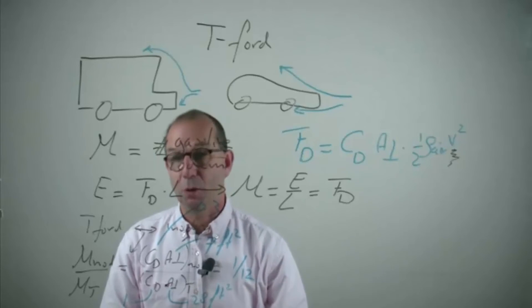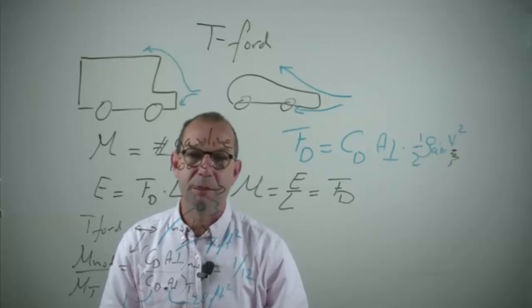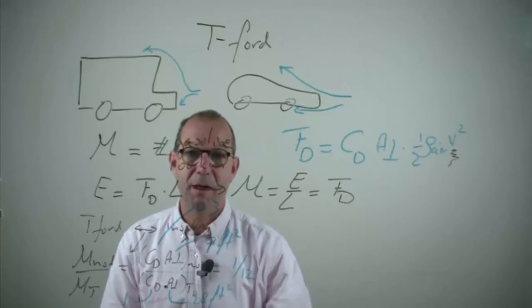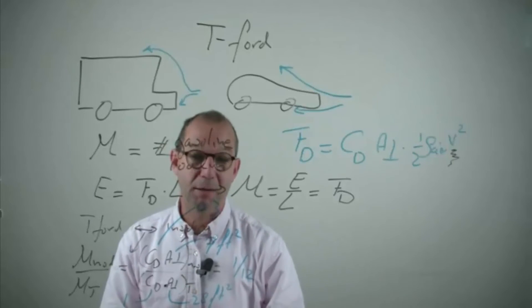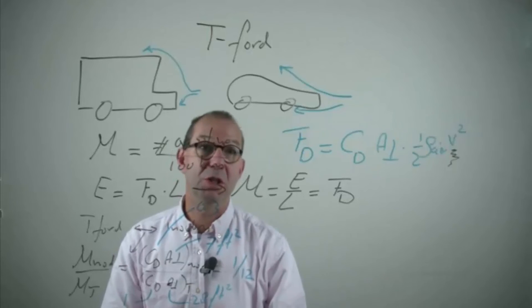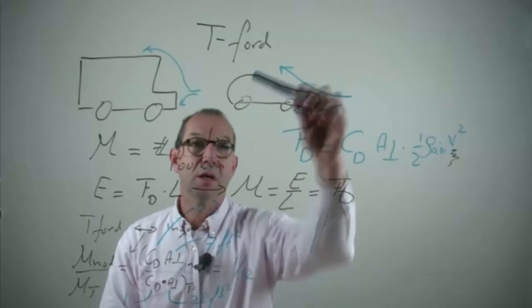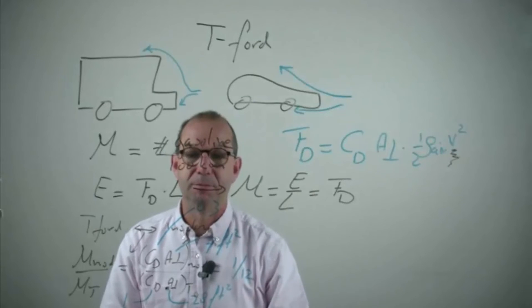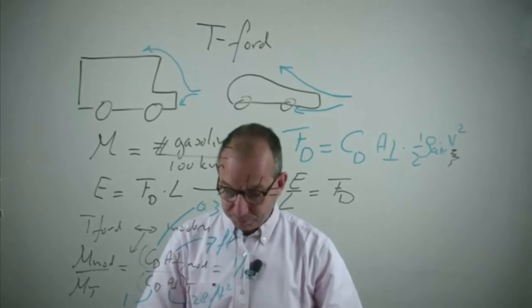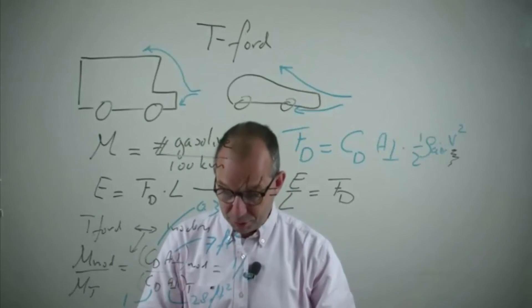This shows that old cars like the T Ford have a very bad mileage. Modern cars via the streamline and via the flattening have a much better mileage. It also shows what you need to do if you want to improve: make the car more streamlined, make it even flatter. We see how this works.